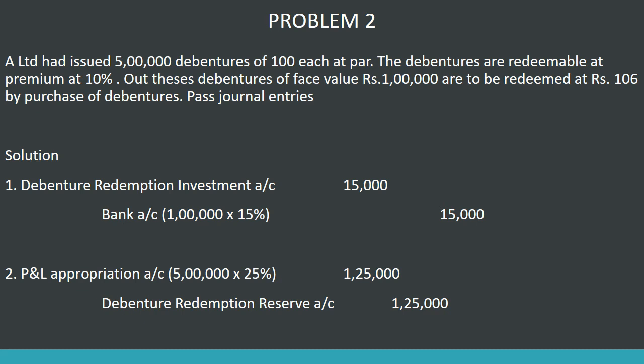This is a case of redemption of debentures — not at a premium by purchase. Then we have a loss and a profit. As usual, at 15 percentage we have to invest. That's why 25% is the DRR, creating the equation. The debenture redemption investment account debtor to bank — after the buyback of Rs. 1 lakh, 1 lakh into 15% is Rs. 15,000. Then DRR: 25% of Rs. 5 lakhs face value is Rs. 1 lakh 25,000. P&L Appropriation account debtor to debenture redemption reserve account: Rs. 1 lakh 25,000.